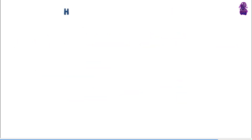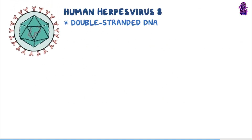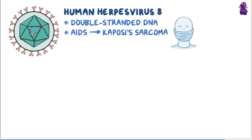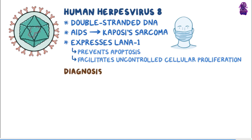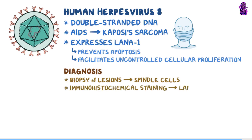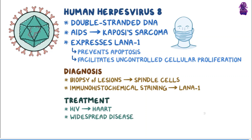As a quick recap, human herpesvirus 8 is a double-stranded DNA virus which causes a type of cancer that most commonly occurs in AIDS patients called Kaposi's sarcoma. HHV-8 expresses a viral antigen called LANA1, which prevents apoptosis and facilitates uncontrolled cellular proliferation. Kaposi's sarcoma affects most commonly the skin, but it can also affect the mouth, GI tract, and lungs. Diagnosis is made with biopsy of lesions and microscopic examination, which can detect spindle cells, and also with immunohistochemical staining, which detects the presence of LANA1. Treatment in HIV-infected individuals is done with highly active antiretroviral therapy, or HAART, and treatment of widespread disease is done using chemotherapy.